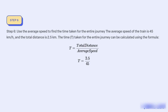Step 6: Use the average speed to find the time taken for the entire journey. The average speed of the train is 45 km/h and the total distance is 2.5 km. The total time t for the entire journey can be calculated using the formula: t = total distance / average speed = 2.5 / 45.